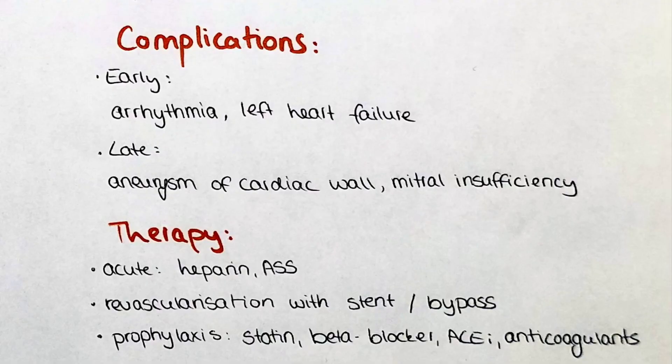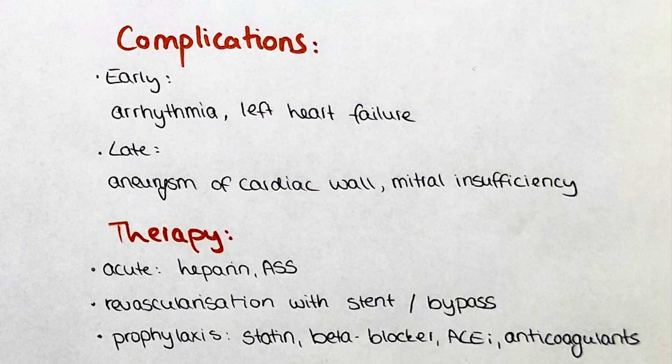After a myocardial infarction, a series of complications can be observed. Those are subdivided into early and late. Early complications include arrhythmia and left-sided heart failure. Late complications include aneurysms of the cardiac wall and mitral insufficiency.